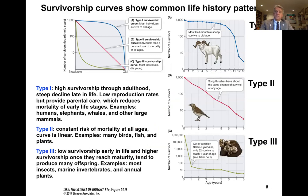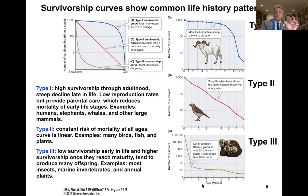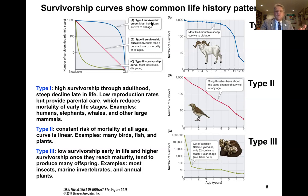We can think of different life history patterns as being characterized by survivorship — the probability of survivorship at different stages of the life cycle. Looking at the number of survivors on the y-axis and age in years on the x-axis, the shape of these curves shows common life history patterns. For example, Type I survivorship curves show most individuals surviving to old age, with a steep decline late in life.